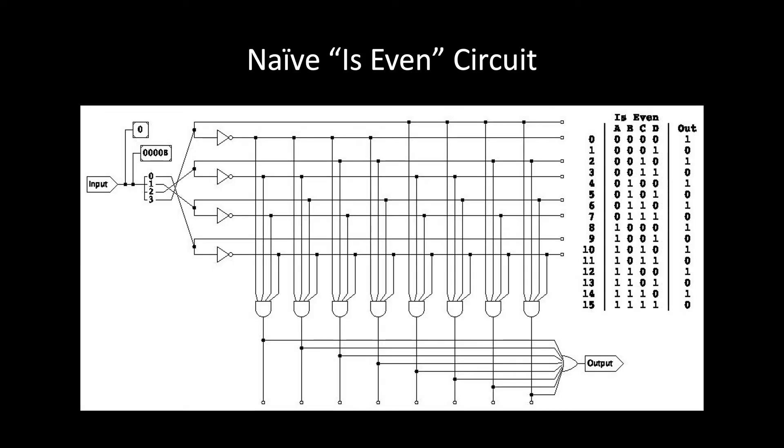Now notice that this circuit uses 13 gates. But think about it for a minute. How can you tell at a glance if a binary number is even? Well, here's a hint. How can you tell if a decimal number is a multiple of 10?